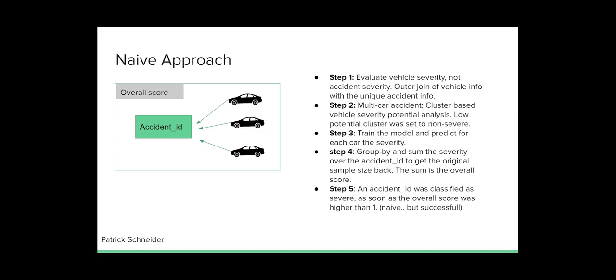How can we do this? My idea was to find an overall score over all involved vehicles in one car accident. With three involved cars in an accident, every major role of the vehicle drivers should be considered in the prediction. Step one, for this, I wanted to predict not the severity of an accident, and instead predict the severity of each vehicle involved. So we join on the vehicle dataset.